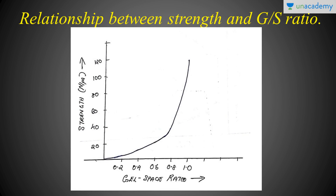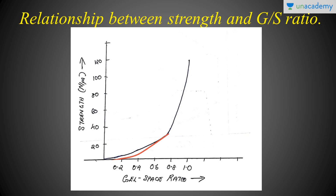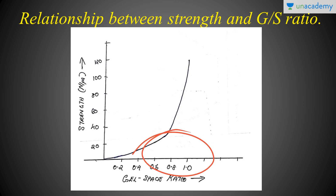Powers and Brownyard also put forward a graph showing the relationship between strength and the gel-space ratio. We have strength on the y-axis and gel-space ratio on the x-axis. As the gel-space ratio moves up, the strength of the concrete gradually increases. When it reaches the 0.6 to 0.8 range, there is a sudden climb upward. Around the 0.8 to 0.9 border, the increment in gel-space ratio slows, but there is a huge strength increase at those points. This is one of the most important graphs in the history of concrete technology.